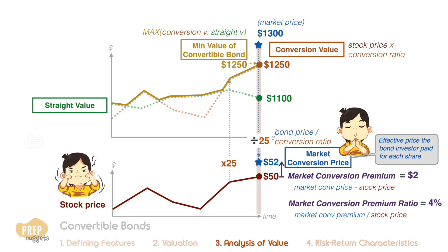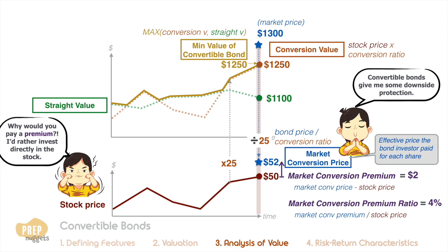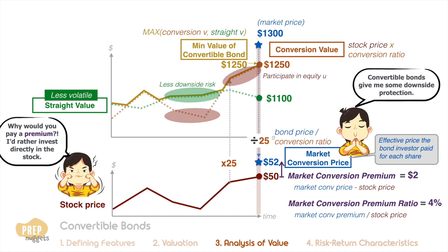You may be wondering why anyone would effectively pay $52 for a share that's trading at $50 in the market. That's because buying convertible bonds instead of stocks limits downside risk. Remember the minimum value of the convertible bond — when the price of the stock is low, the minimum value of the convertible is its straight value, which is often much less volatile than the stock price. So for an investor worried about downside risk but who would like to participate in the upside of the stock, he would buy and hold the convertible bond instead of common shares. The premium paid can be seen as a premium for downside protection.